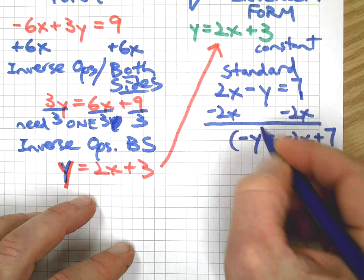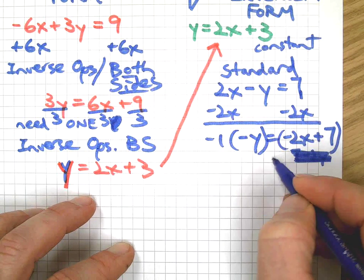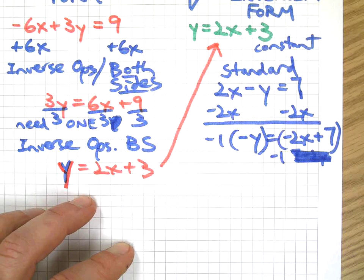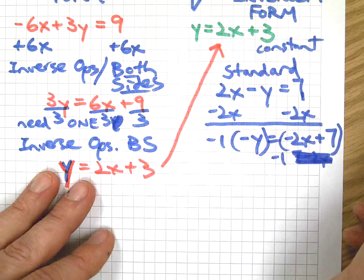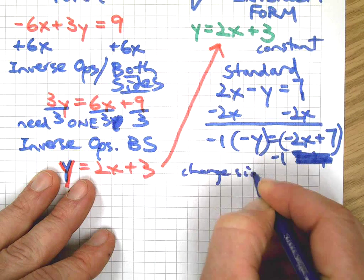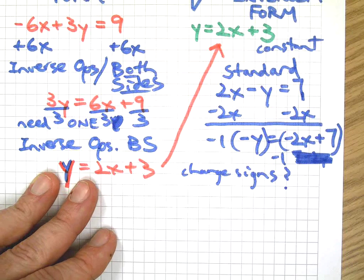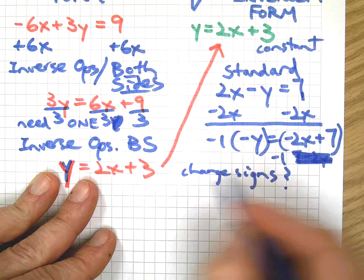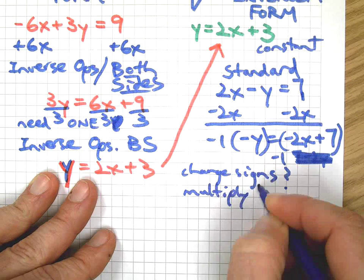We need to multiply both sides by negative one. We want a positive y. So anytime you want to change the signs, you want to go from being a Pisces to a Taurus, well, all you have to do is multiply by negative one.